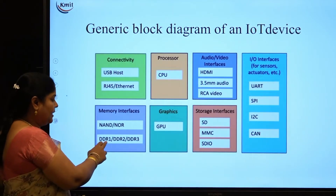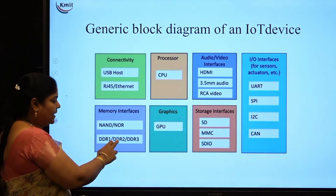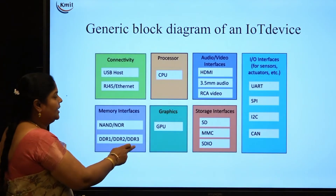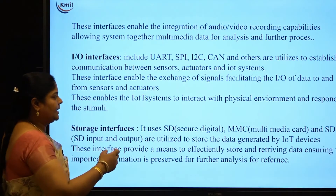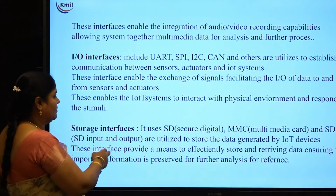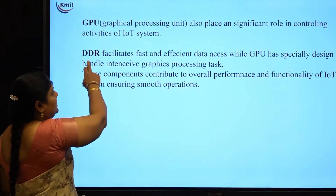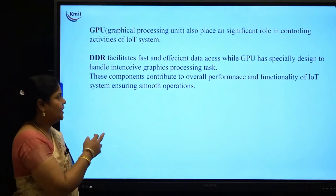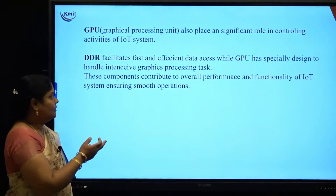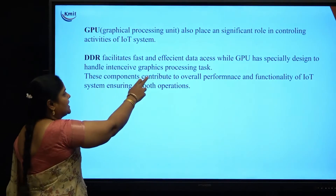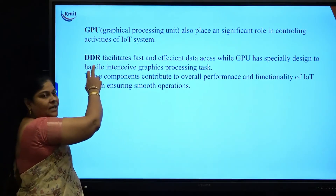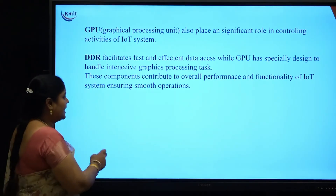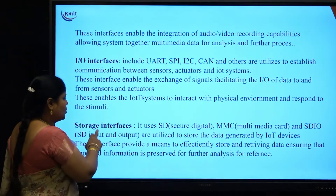You also have advanced types of memory interfaces like DDR1, DDR2, and DDR3 — DDR stands for Double Data Rate. The speed of data retrieval is greater when using these interfaces. DDR1, DDR2, and DDR3 facilitate fast and effective data access.